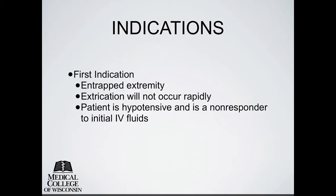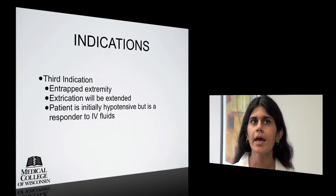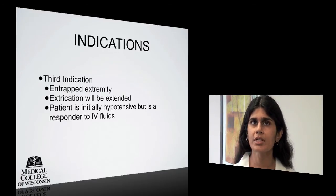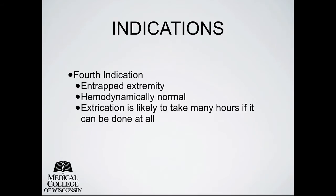This first scenario illustrates the life-over-limb model. The second indication involves an entrapped extremity with extrication not occurring rapidly, where field amputation is necessary because further structural collapse or bodily injury is imminent if the patient is not rapidly extricated. The third and fourth indications are more dependent on field provider judgment. The third indication involves an entrapped extremity with prolonged extrication, but the patient is a responder to IV fluids — this scenario involves careful thought and discussion with all team members, medical and non-medical. The final scenario involves an entrapped extremity in a hemodynamically normal patient where extrication is likely to take many hours, if it can be done at all.